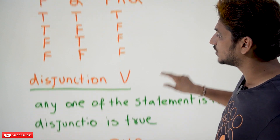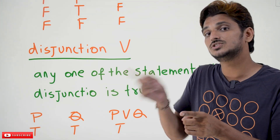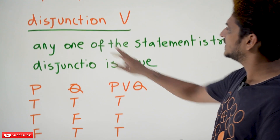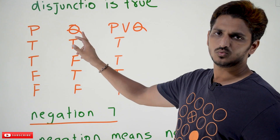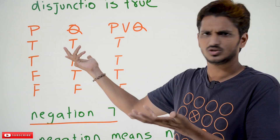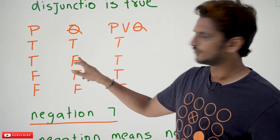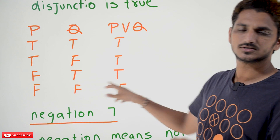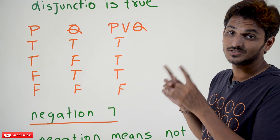Similarly, disjunction works similar to 'or' in English — any one of the statements being true makes the disjunction true. For P and Q: true, true — any one is true, so P ∨ Q is true. True, false — any one is true, so true. False, true — true. Both false — false. Any one of the statements being true makes our disjunction true.